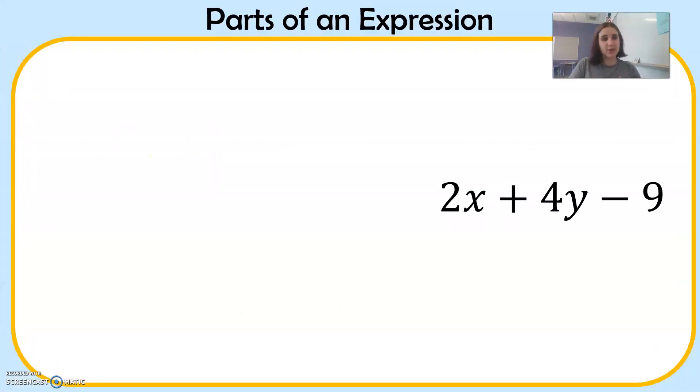So let's look at the different parts of an expression. What are all the names for these? We're going to look at the example 2x plus 4y minus 9, and label what each of these parts is.